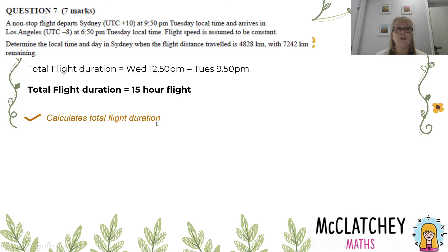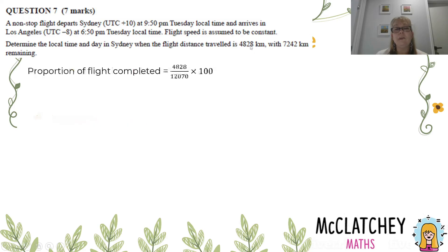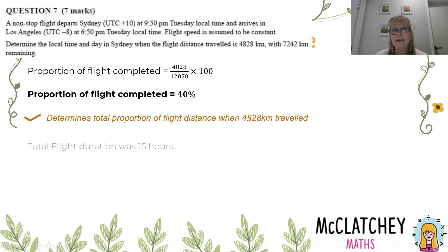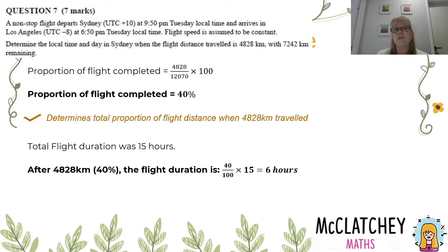Now I've got this 15-hour duration. What I really want to know is how many hours into the journey I've been flying if I've covered 4,828 km. I'm going to look at what percentage of the total that is. The total distance was 12,076 km, so what fraction of 12,076 is 4,828? That's actually 40% of the flight completed. I get another mark for that. Now I'll work out 40% of 15 hours: 40/100 multiplied by 15 equals 6 hours. So 40% of the flight is completed at 6 hours in.